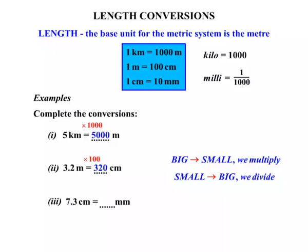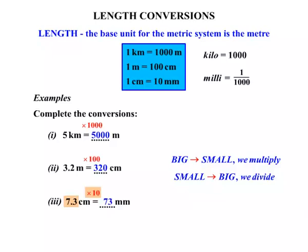Our third example: seven point three centimetres equals how many millimetres? For centimetres and millimetres, the connection is that one centimetre equals ten millimetres. Since we're changing centimetres to millimetres — once again a bigger measurement changed to a smaller measurement — we're going to multiply by ten. Seven point three times ten equals seventy-three. So seven point three centimetres equals seventy-three millimetres.